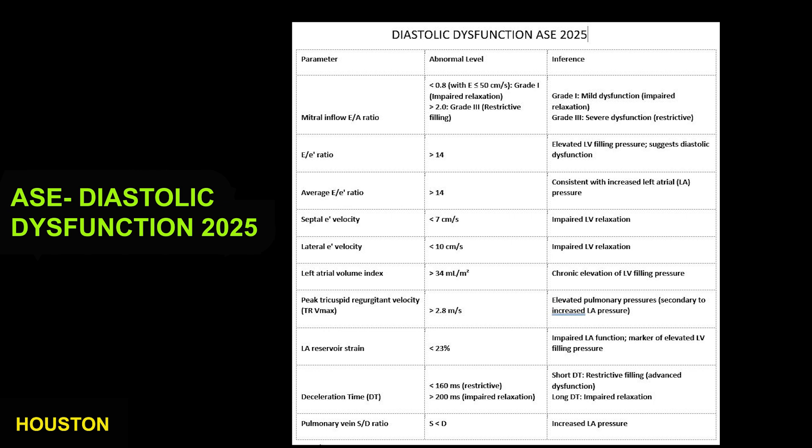Left atrial volume index greater than 34 ml per meter squared suggests chronic elevated left ventricular filling pressure. A peak tricuspid velocity greater than 2.8 meters per second suggests elevated pulmonary pressure and left atrial pressure.